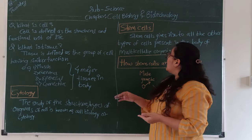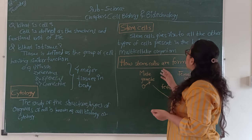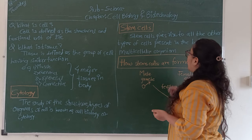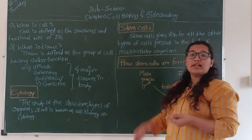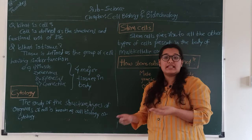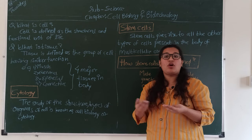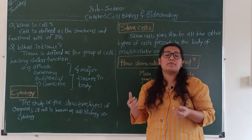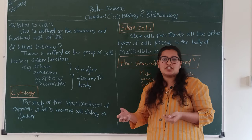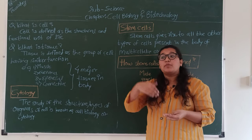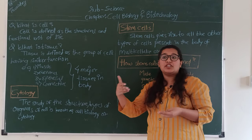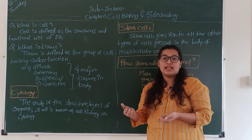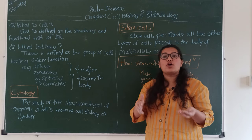So what are stem cells? Stem cells give rise to all other types of cells present in the body of multicellular organisms — meaning human beings and animals. These stem cells are basically like angels or magicians; if other tissues are damaged, they help with wound healing.